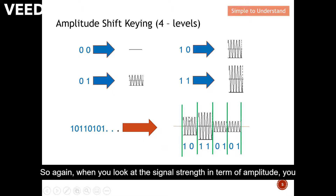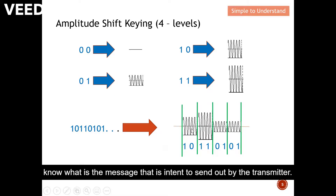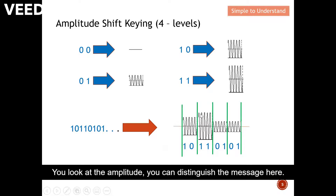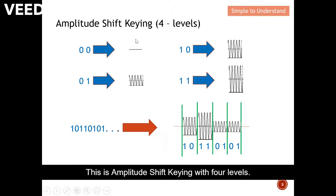When you look at the signal strength in terms of amplitude, you can determine what message was sent by the transmitter. By examining the amplitude level, you can distinguish the message. This is amplitude shift keying with four levels.